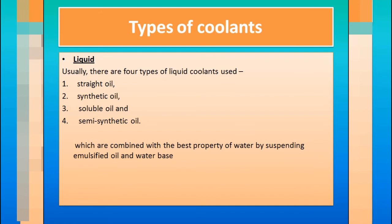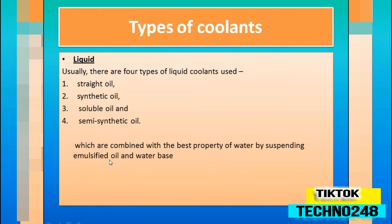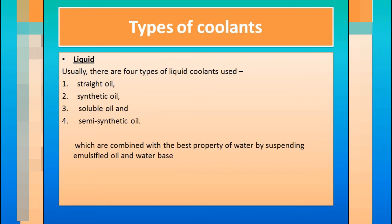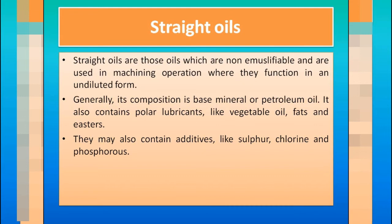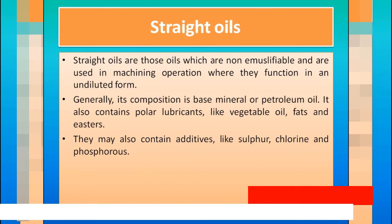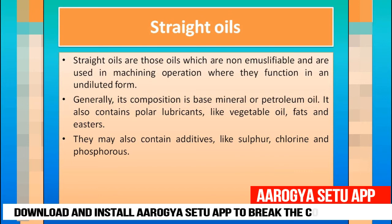Toh which are - yeh jo combined karke best property, yeh keh sakte hain these four types of liquid coolants which are combined with the best property of water by suspending emulsified oil and water based. Toh isme basically emulsified oil aur water base hota hai. Yeh sari chizein one by one hum discuss karenge. Yeh jo lubricants - types of coolants hain - liquid coolants. Sab se pehle aapka hai straight oils. So straight oils are those oils which are non-emulsifiable and are used in machining operation where they function in an undiluted form. Non-emulsified matlab woh dilute nahi hota, yeh kisi ke saath mix nahi hota, yani poori tariqe se ghulanseel nahi hota.